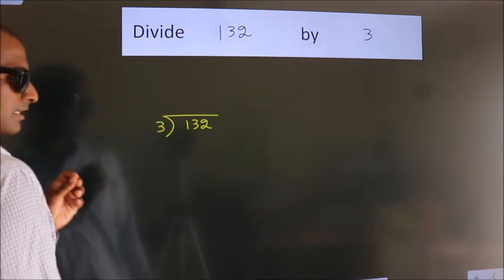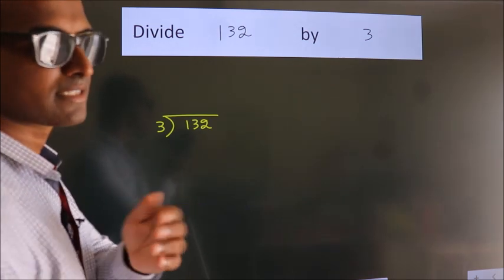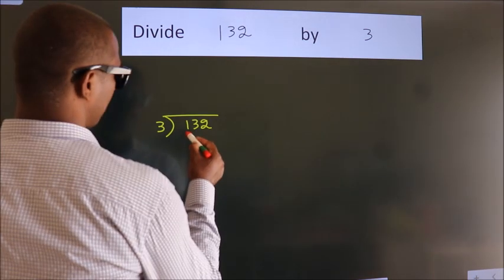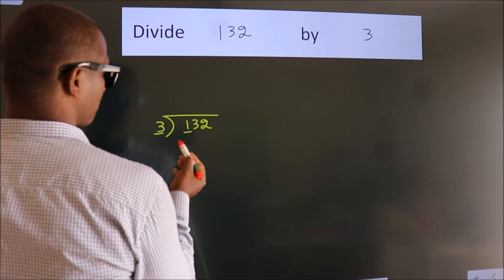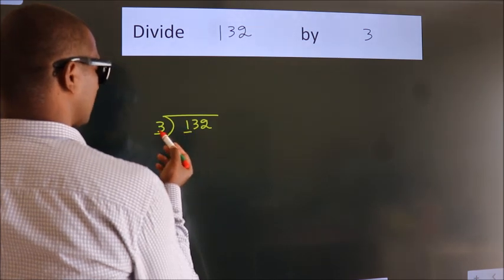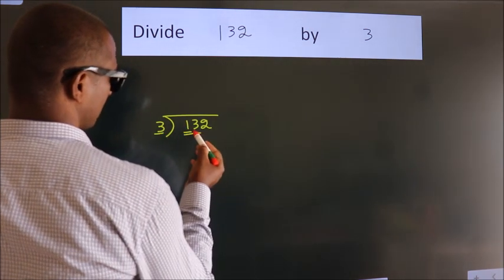This is your step 1. Next, here we have 1, here 3. 1 is smaller than 3. So we should take 2 numbers, 13.